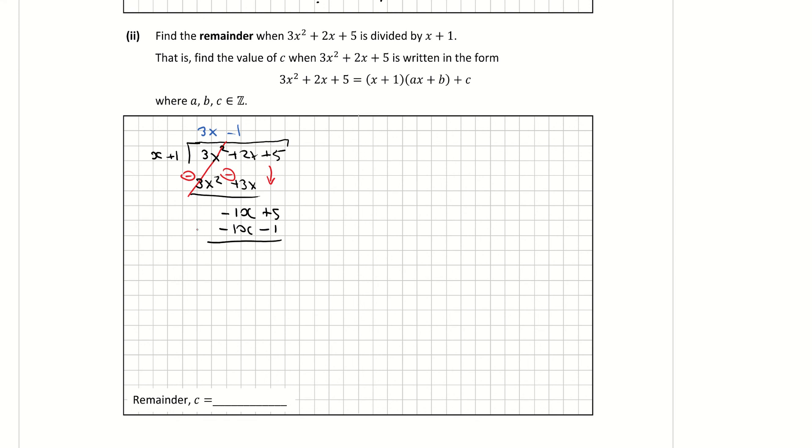Same thing again, multiply across by a minus or change the signs. So that one becomes a plus, that becomes a plus, they'll cancel. And then 5 + 1 is 6. So that's basically just telling me, therefore, my remainder is equal to 6.